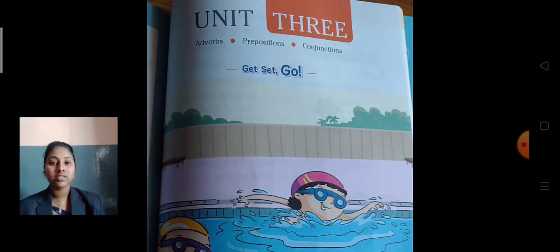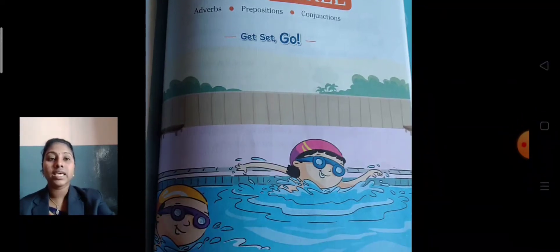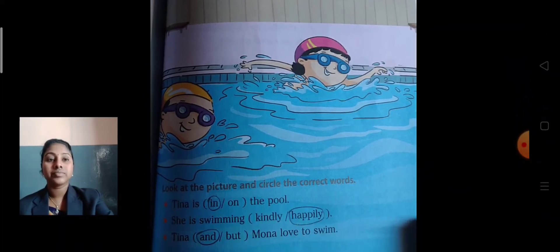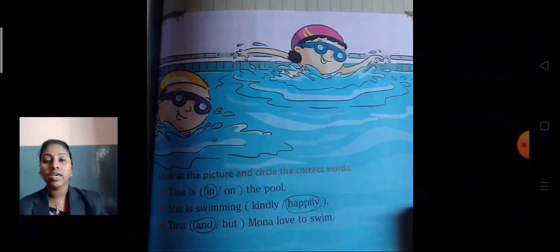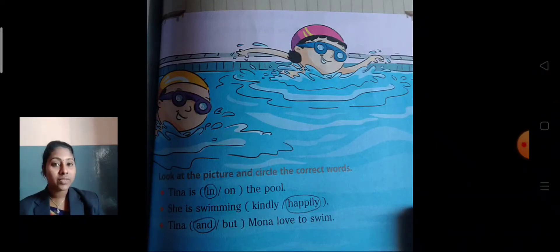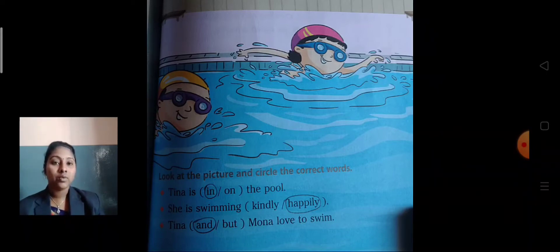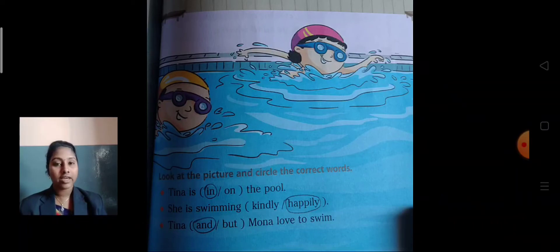Before that, we will discuss the picture given on the first page of this unit. You can see two children are swimming. Look at the picture and circle the correct words given in the three sentences.